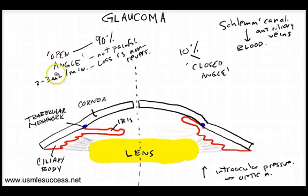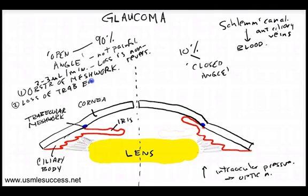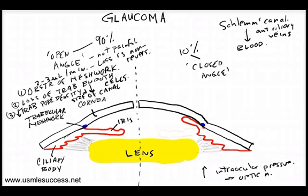Some causes of open angle glaucoma include obstruction of the trabecular meshwork — even though the angle isn't limiting, dead debris or cells that have died off plug up the meshwork so fluid has nowhere to go. Another cause is a loss of trabecular endothelial cells, and a third common cause is a reduced trabecular pore density as well as a reduced size of the inner wall of Schlem's canal.